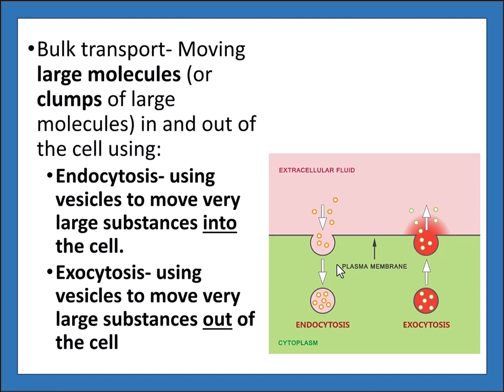Exocytosis — 'exo' meaning out — uses vesicles to move very large substances out of the cell. This would include large molecules of waste, old pieces of organelles, or things the cell doesn't have a use for and can't recycle. Both endocytosis and exocytosis are types of bulk transport, and both are active — they require energy.